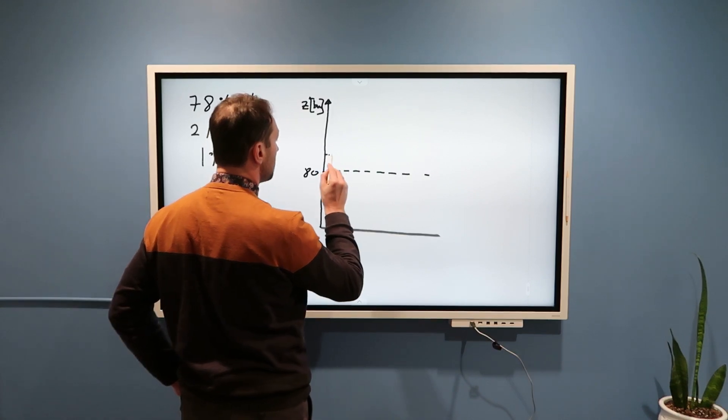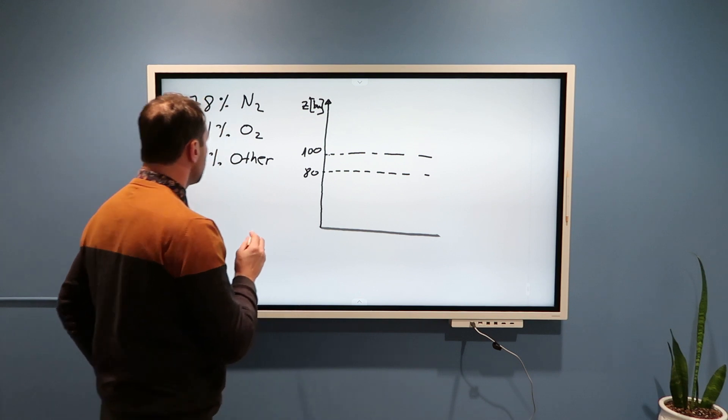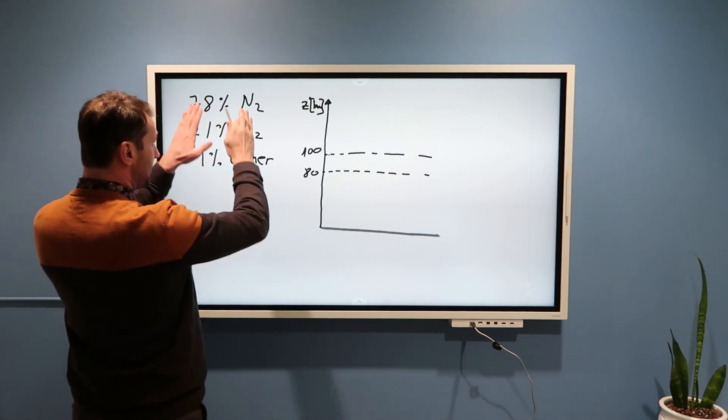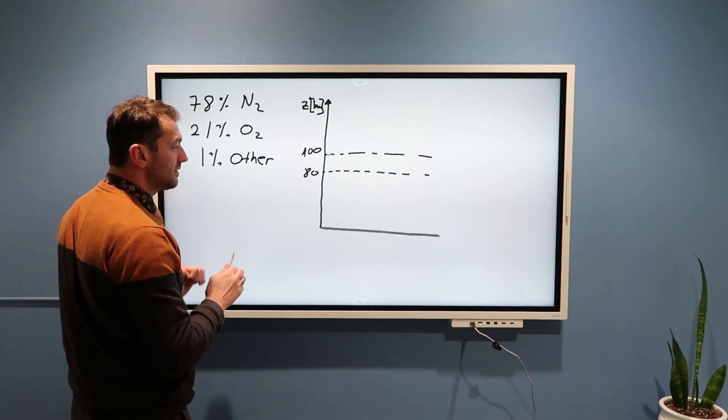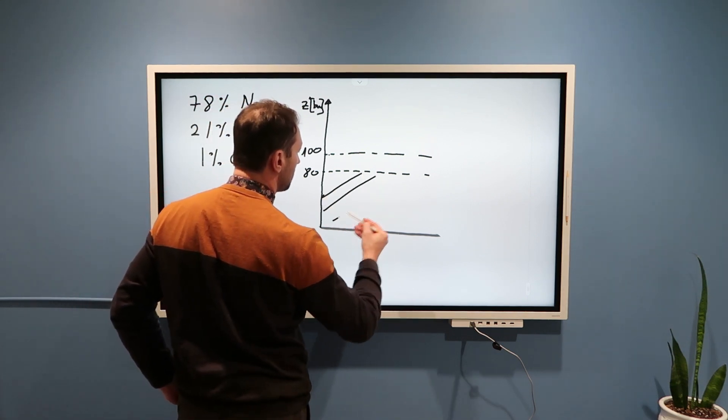If I put somewhere here 80 kilometers, and somewhere here 100 kilometers, then these percentages, relative percentages, only apply in this part of the atmosphere.